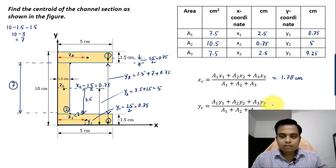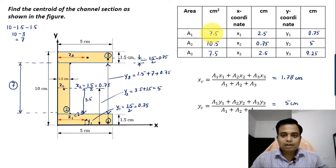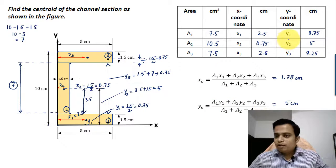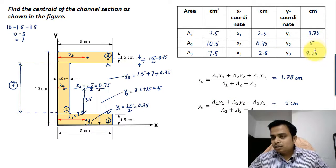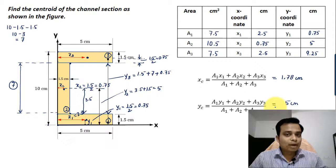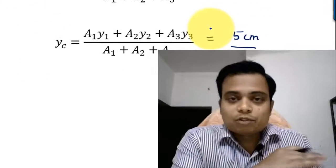And then the final value of yc is going to be 5 centimeters. You can do the math: put the values of A1, A2, A3 here and then put the values of y1, y2, y3, and the y coordinate of the centroid obtained is going to be 5 centimeters.